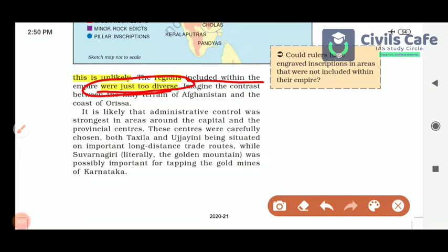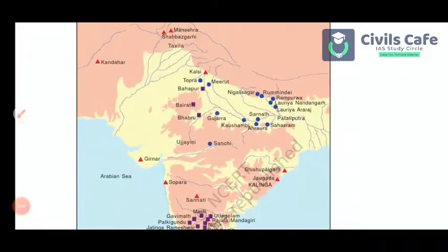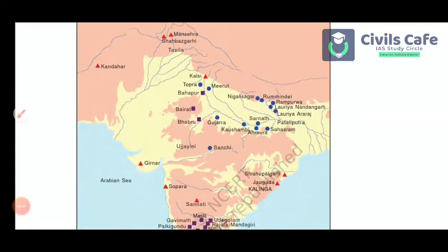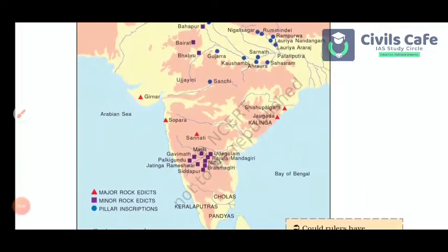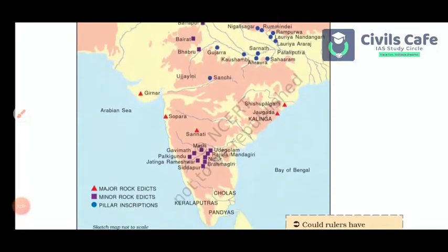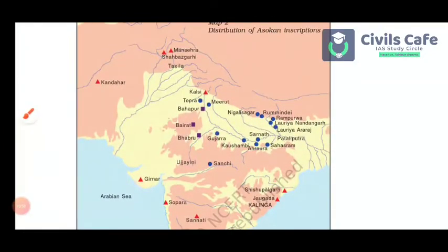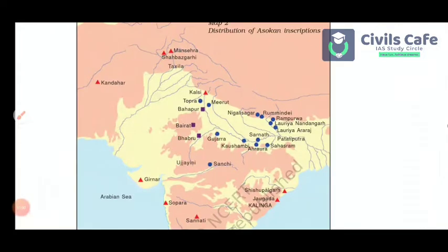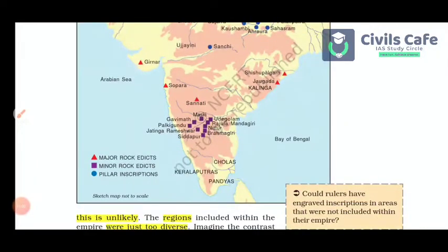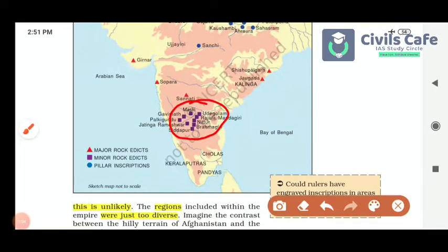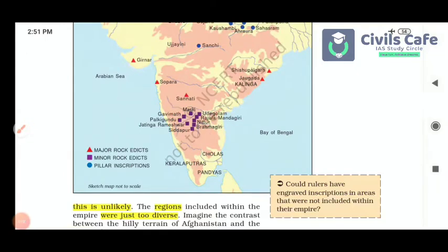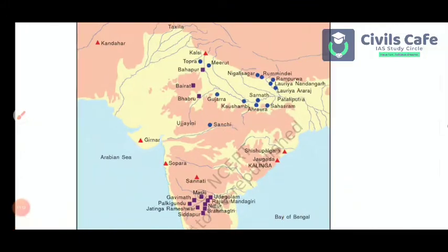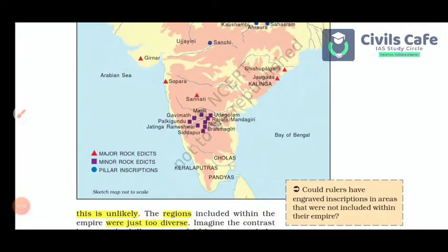The map shows the distribution of rock edicts and stupas. Major rock edicts can be seen at Kandahar, Shahbazgarhi, Kalsi, Girnar, Sopara, and Sanchi. Minor rock edicts show a concentration in the south, especially in the Andhra region, while pillar inscriptions are concentrated around the Gangetic plain.